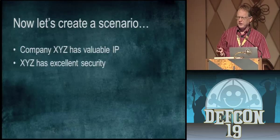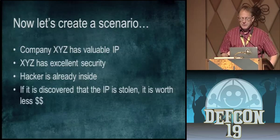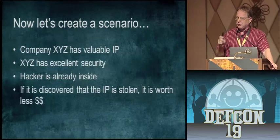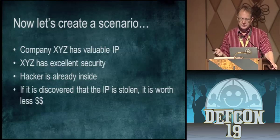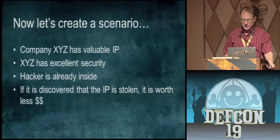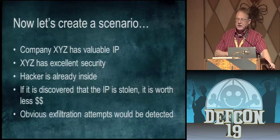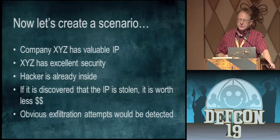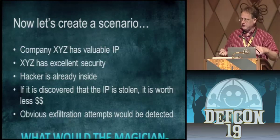The hacker is already inside the network with limited access. Also, if the intellectual property is stolen and they learn about it, it may not be worth as much — trade secrets are more valuable if stolen without the victim knowing. Any obvious attempt to extract information and send it out to the internet would be detected and blocked. So what would the magician hacker do?